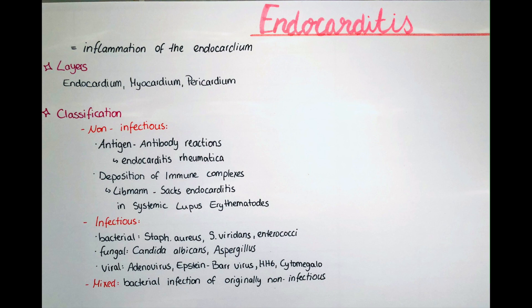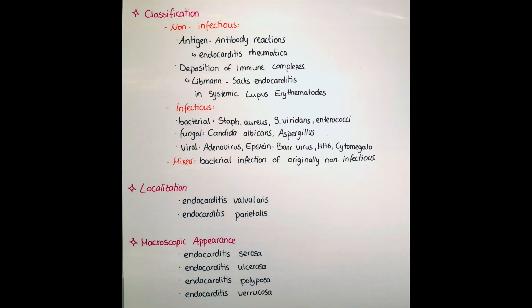A mixed form of endocarditis occurs when there is bacterial infiltration of an originally non-infectious endocarditis. Regarding localization, it can either be endocarditis valvularis — primarily affecting the valves, where Staphylococcus aureus often produces a yellow-greenish color on the vegetations — or endocarditis parietalis, which is more rare and affects the walls of the atria and ventricles.